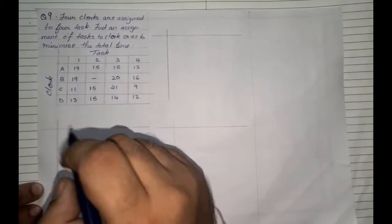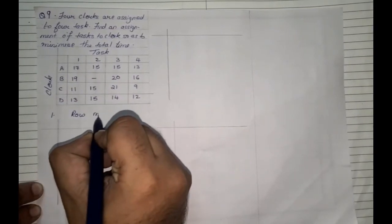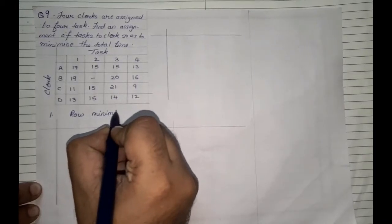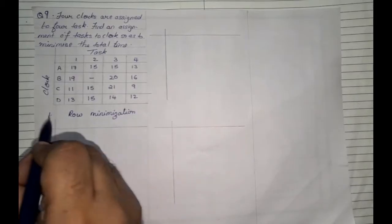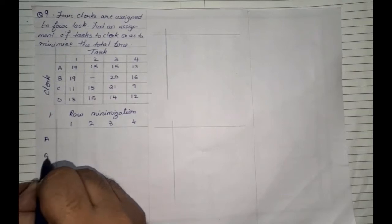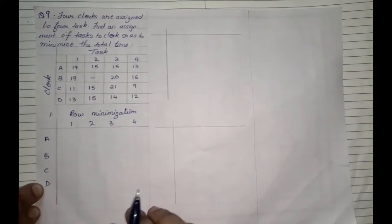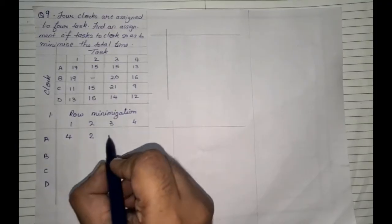Since it is a minimization sum, step number 1 is row minimization. We create the similar structure of our table with rows 1, 2, 3, 4 and columns A, B, C, D. Row minimization means from each row take the lowest value and subtract it from all other values. So for row 1: 17 minus 13 is 4, 15 minus 13 is 2.